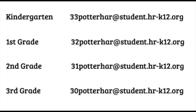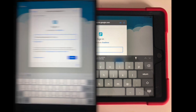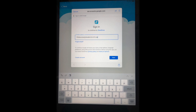The numerals are followed by the student's last name and the first three letters of the student's first name, at student.hr-k12.org. Take a moment to write down your student's Google account, and then click in the box to sign in. For this kindergarten student, whose name is Zachary Latour, his Google account would read as follows: 33 for year of graduation, Latour, Z-A-C, at student.hr-k12.org.